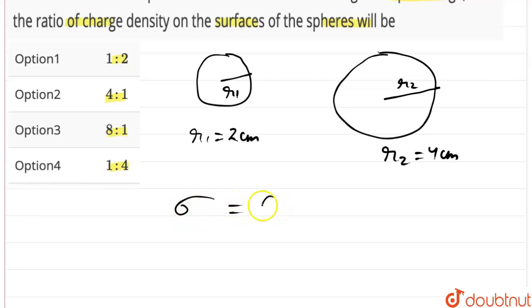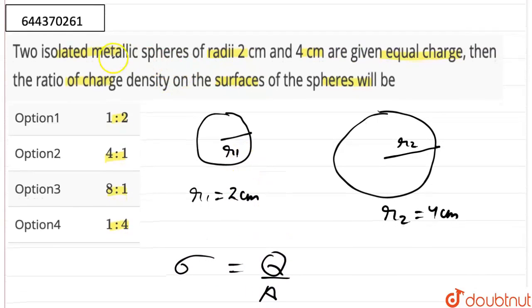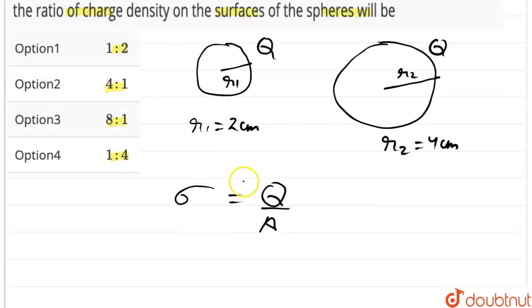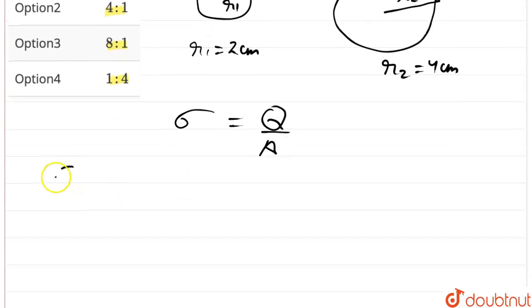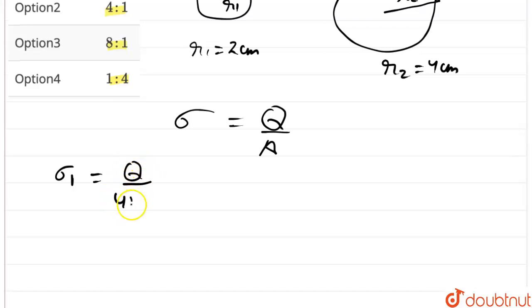Now here the metallic spheres are given equal charge, so the charge is Q in both cases. Now for the first sphere, sigma 1 would be Q divided by 4πr1², and for the second sphere, sigma 2 would be Q upon 4πr2².